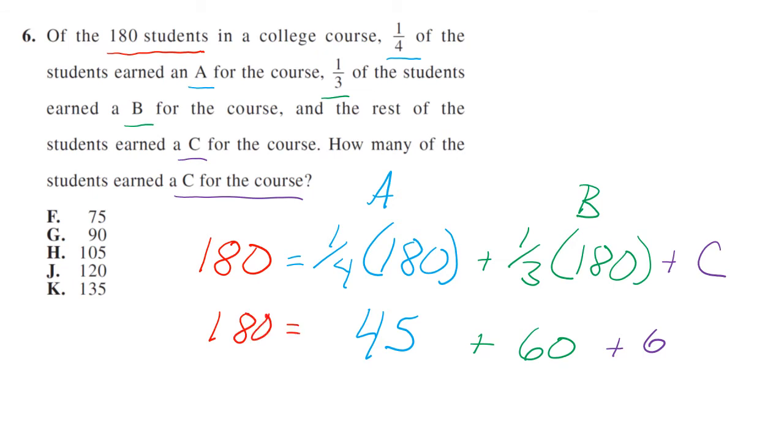So then we're going to subtract 60 and 45 from both sides, and then we get 75 equals C. And so our answer is F.